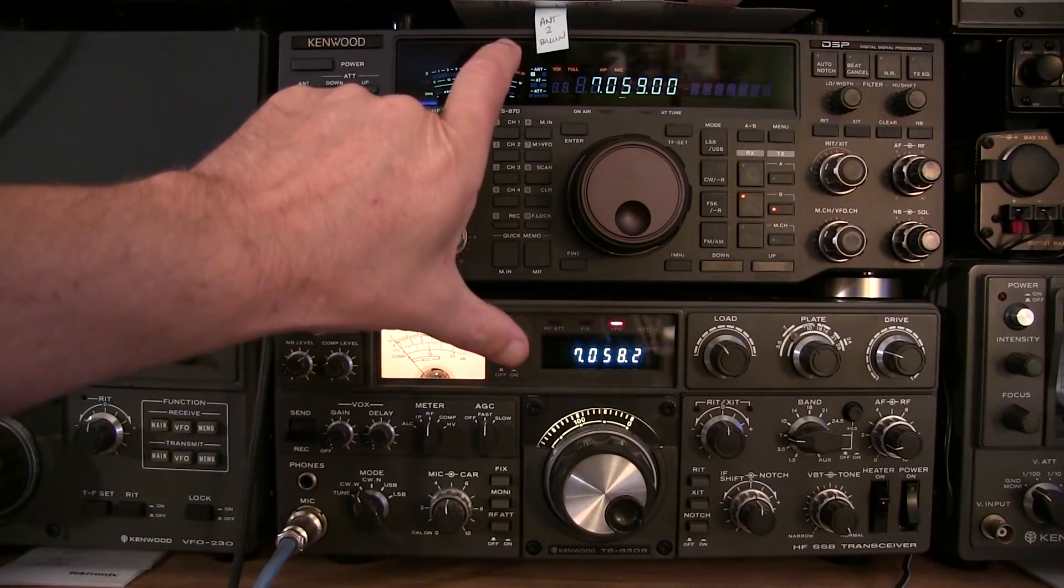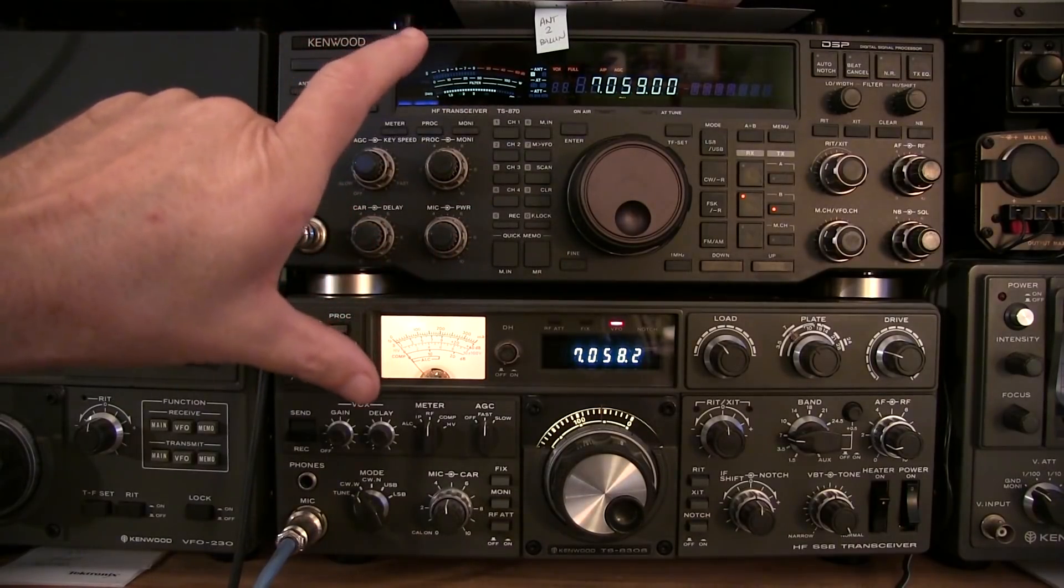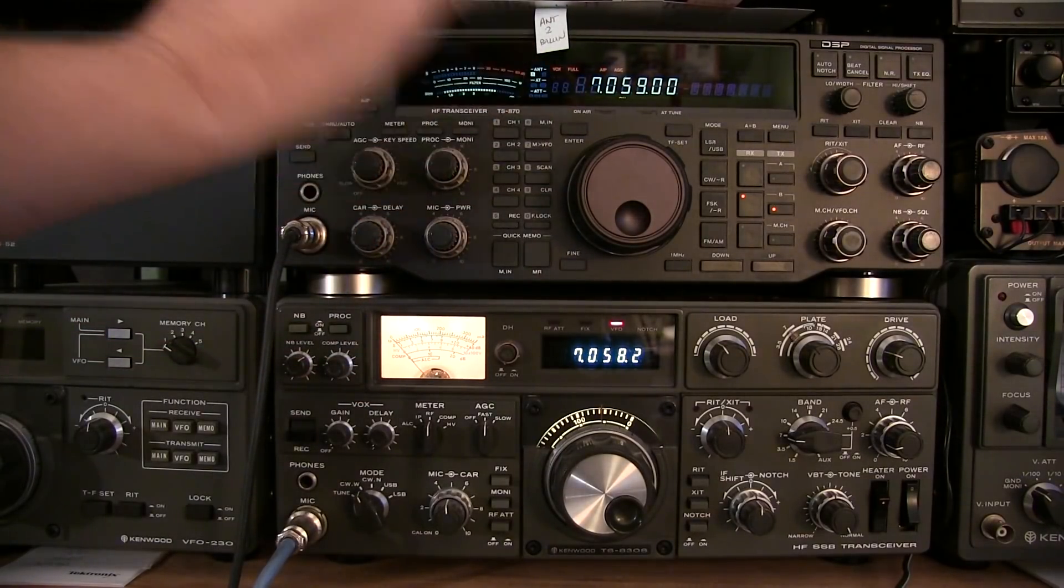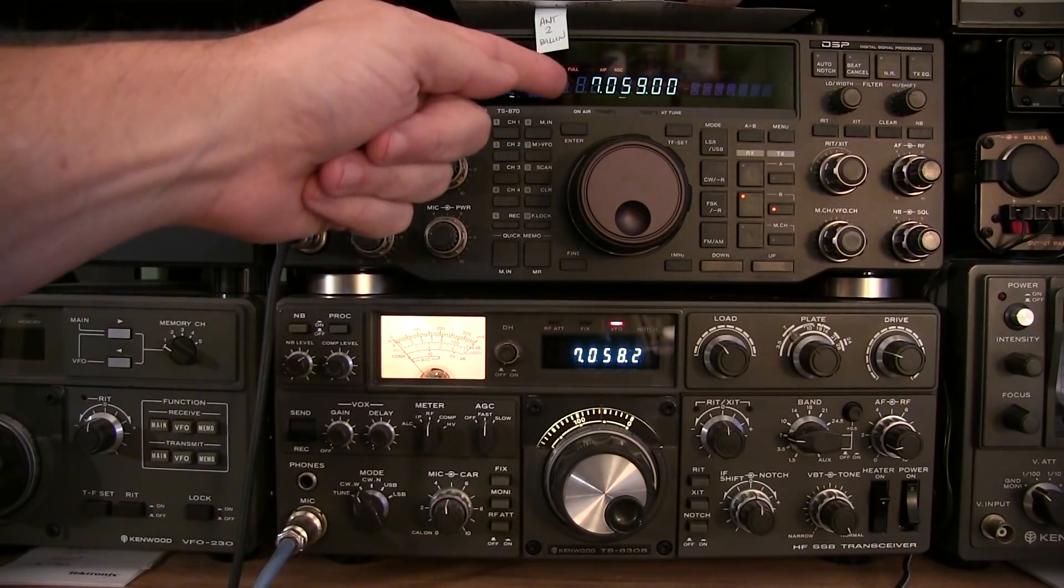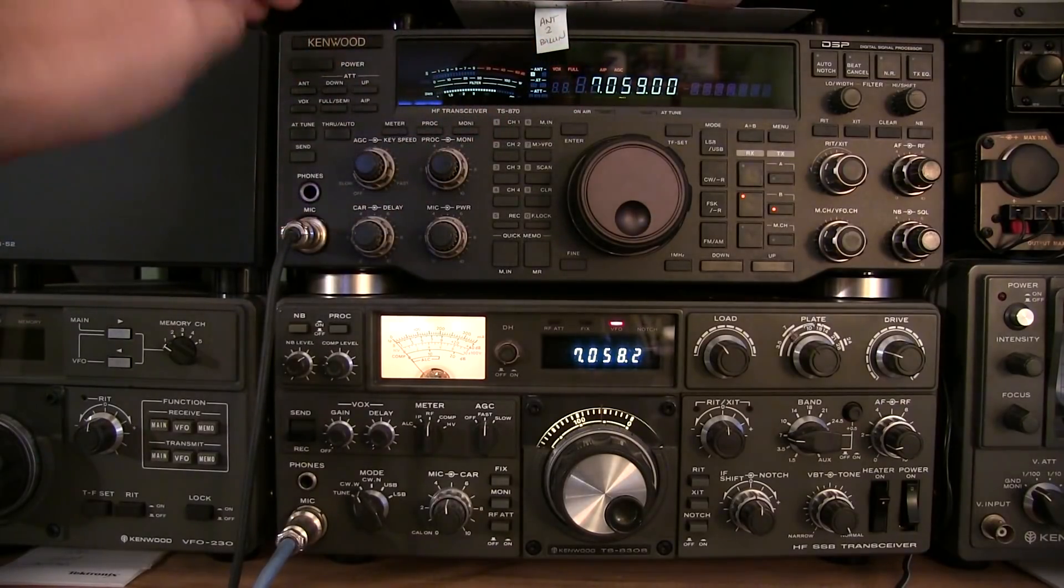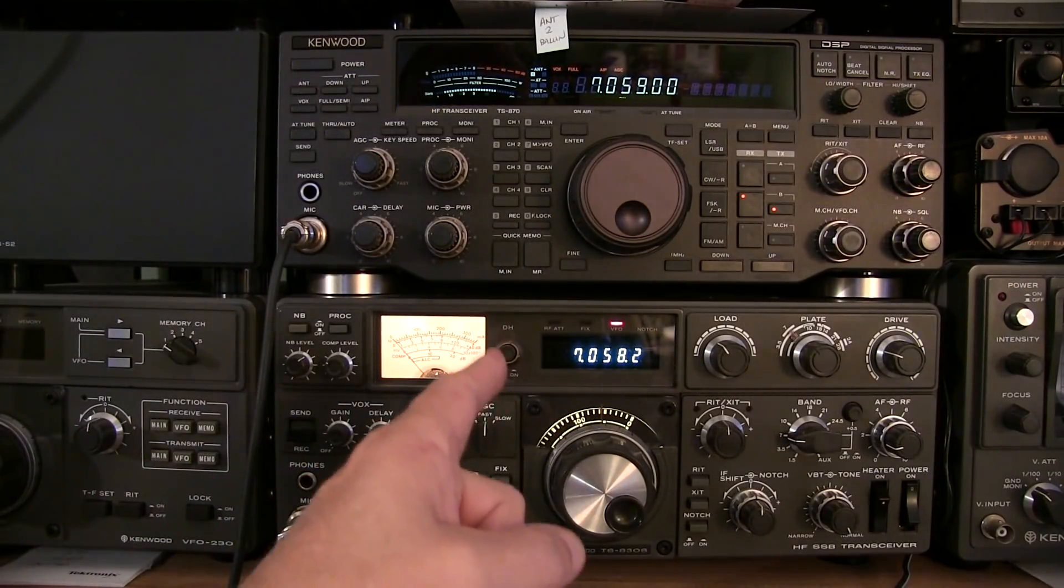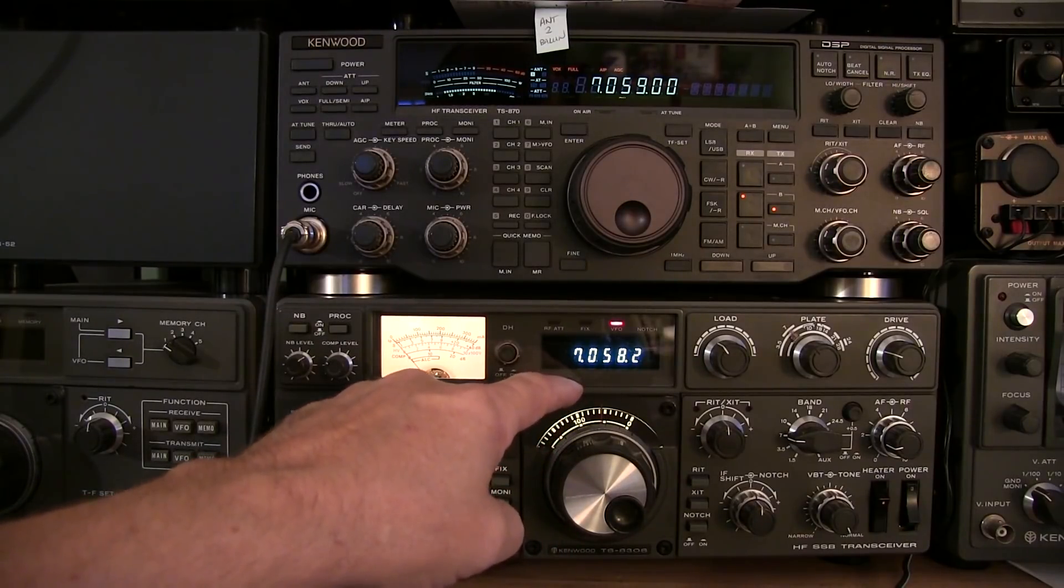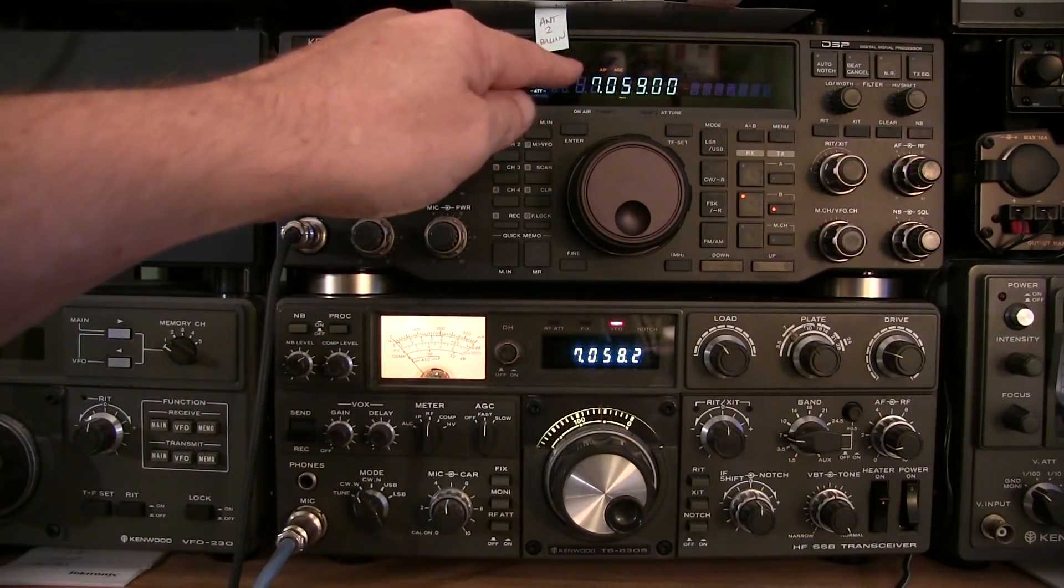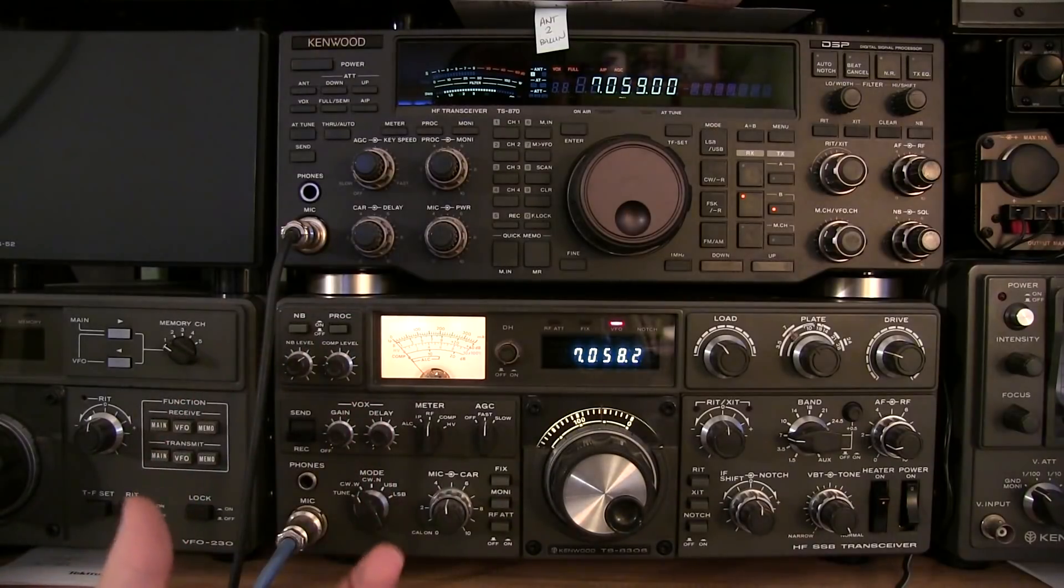Now you might say, hey, wait a minute, they're not tuned to the same frequency. That's not fair. Well, the reality is they kind of are. On the 870, the display will always read the signal that you're receiving and the signal that you're transmitting. And the side tone is generated internally. On the 830, the receiver is always going to show where you're zero beated. So in order to hear my CW signal at 7059, I need to be tuned down a little bit so that I can hear the side tone using the BFO.